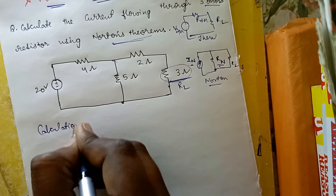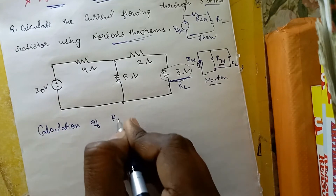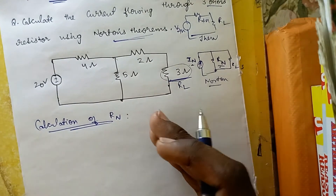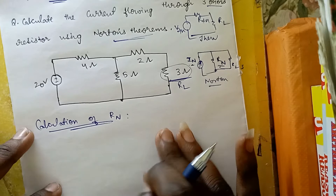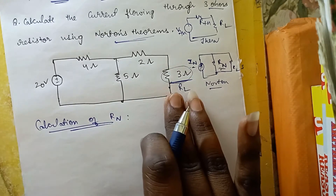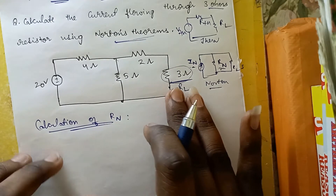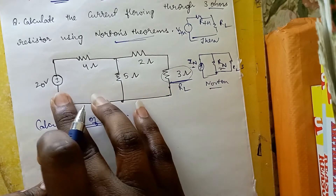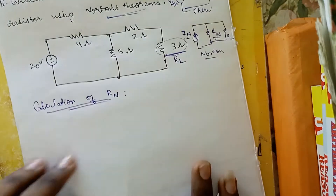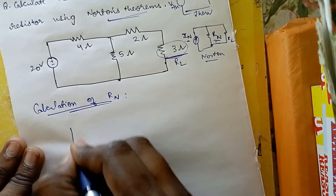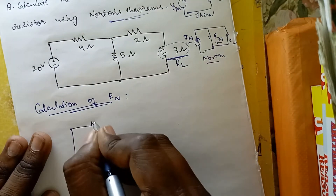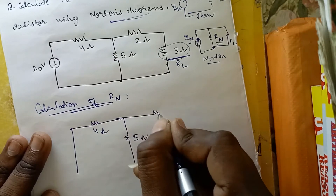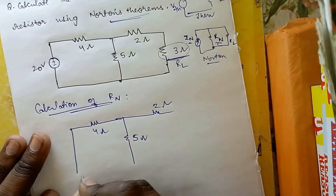First, we go with the calculation of Rn. The procedure is the same as Thevenin's theorem. We remove the load resistance, and short circuit the voltage source. After short circuiting the voltage source, we have the 4-ohm, 5-ohm, and 2-ohm resistors remaining in the circuit.